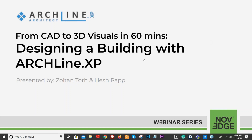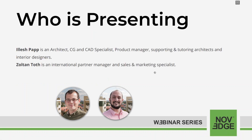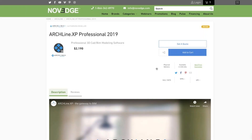Hello everyone, welcome to today's Novage webinar: From CAD to 3D Visuals in 60 Minutes. Meet ArcLine XP, the design software targeted for architectural projects. Learn how to import existing CAD drawings, draw multi-story buildings, generate sections and elevations from your model, and create immersive visuals. Today's presenters are Elish Pap, an architect, CG and CAD specialist, and Zoltan Toth, sales and marketing specialist.